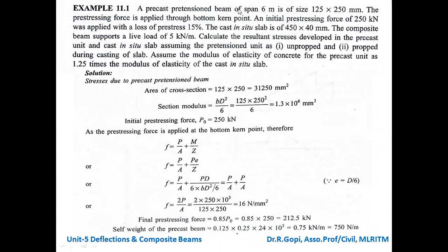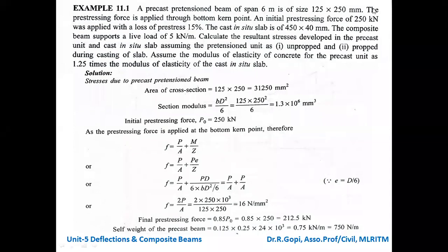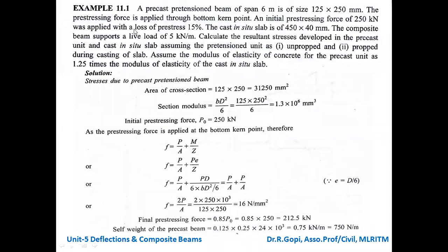A precast pre-tensioned beam on a span of 6 meters has a size of 125 mm × 250 mm — a rectangular section prestressed beam. The prestressing force is applied at the bottom of the beam. An initial prestressing force of 250 kN is applied with a loss of prestress of 15%. A cast in-situ slab of 450 mm × 40 mm is placed above the beam.